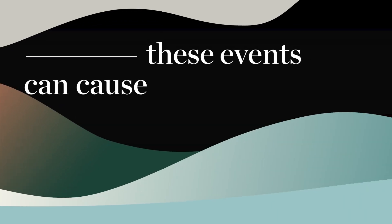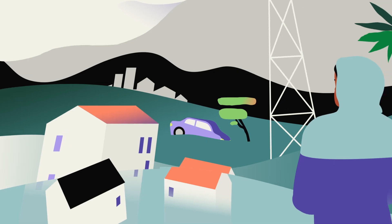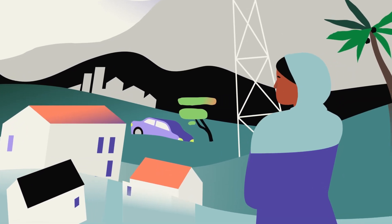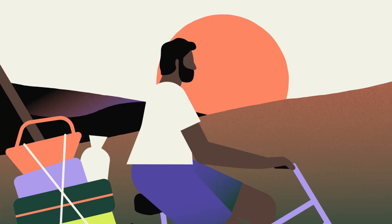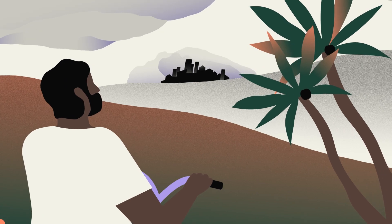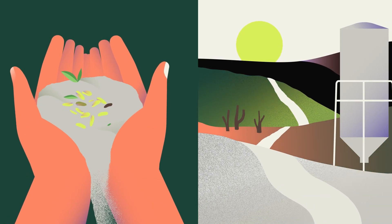These events can cause lasting harm. Homes damaged in floods may take years to rebuild. Farmers who lose crop after crop have to find another way of life. Their communities have to find another source of food.